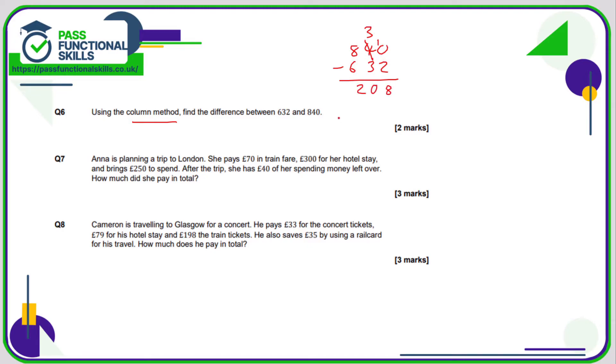So in question number seven, we know that Anna spends £70 and £300, and most of her spending money she spends £250 but has £40 left over. So what she has spent is 250 minus 40, which is 210 pounds. So her spending money that she's actually spent is 210 pounds.